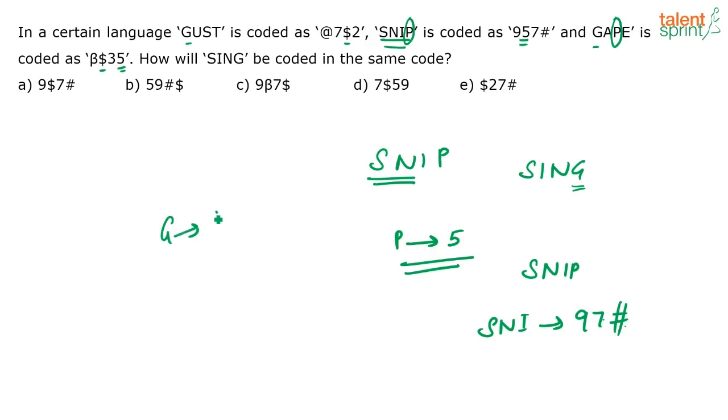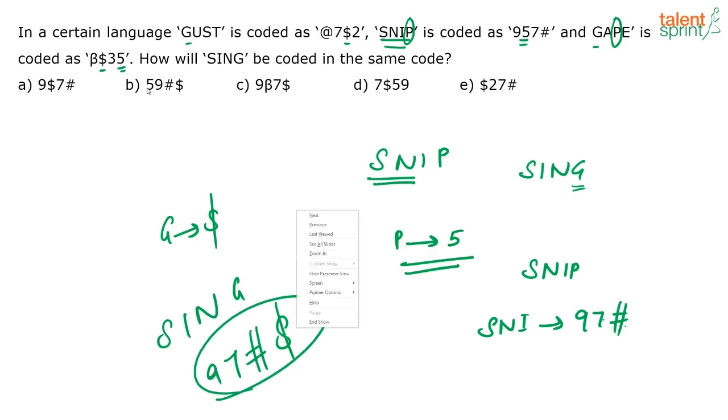Again, if you compare these two words, gust and gape, G is the only letter that is common in these two. And the only symbol that is common is dollar. So, I can say that G is coded as dollar. So, when I look at the word SING, what should be my code? I should have a 9, I should have a 7, I should have a hash and I should have a dollar. Now, order, I just know that these four have to be there. There is only one option which has all these four, that is option A. Directly mark that as the answer.